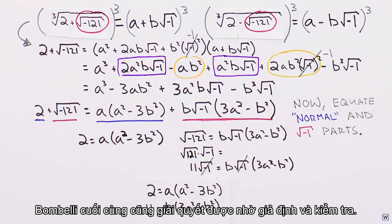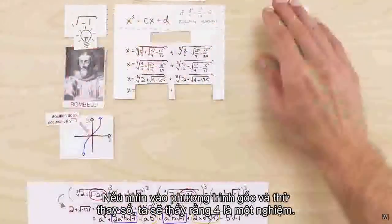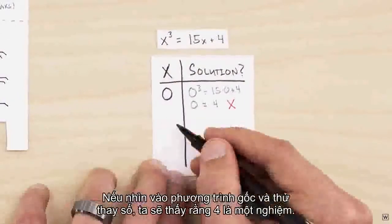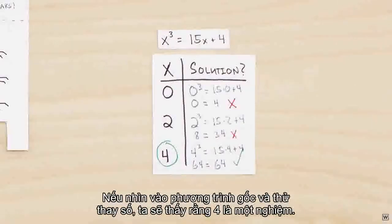Bombelli was able to get around this through some clever guessing and checking. If we look at our original equation and test a few integers, we eventually see that four is a solution.